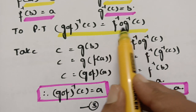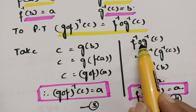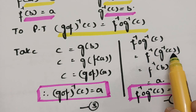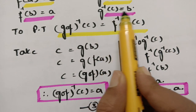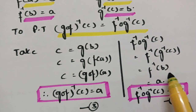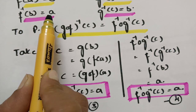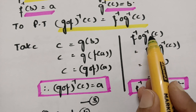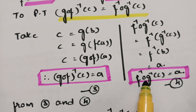For the RHS, F inverse circle G inverse of c equals F inverse of G inverse of c. G inverse of c equals b, so this becomes F inverse of b, which equals a. So F inverse circle G inverse of c also equals a. In both cases, taking c as the domain gives the answer a.